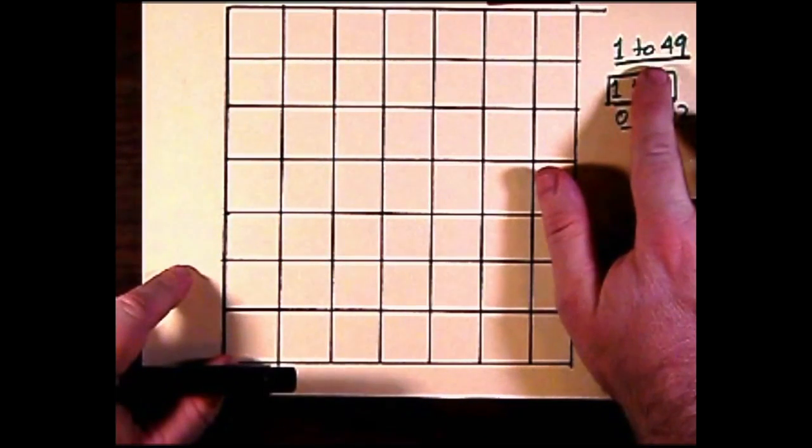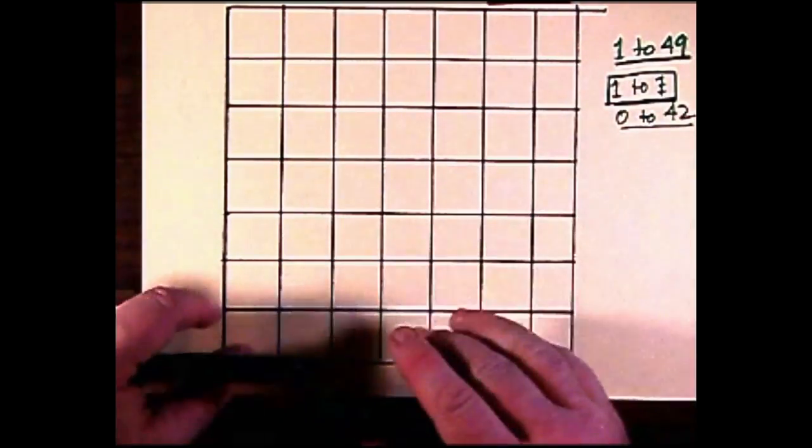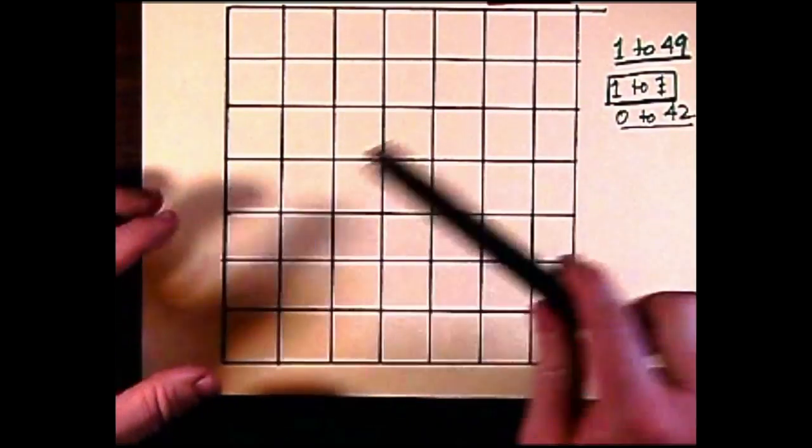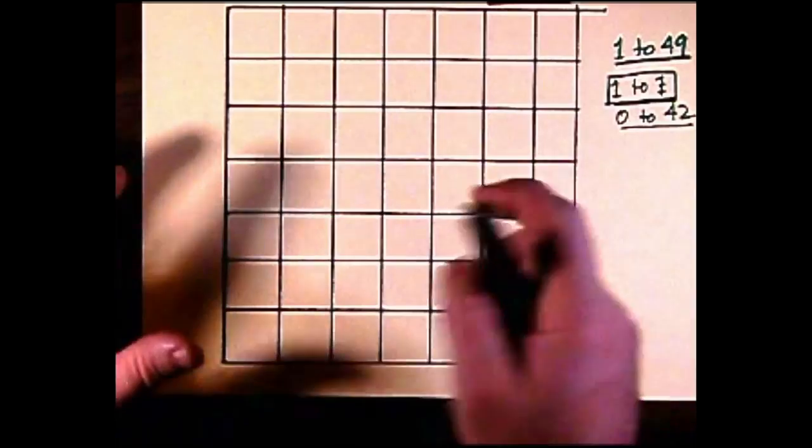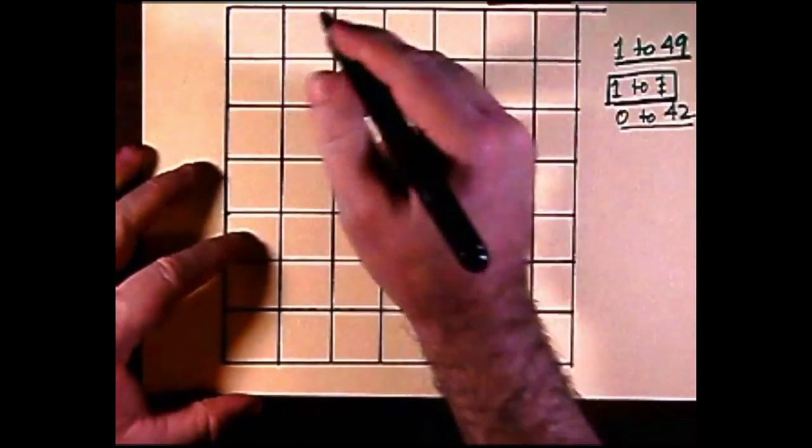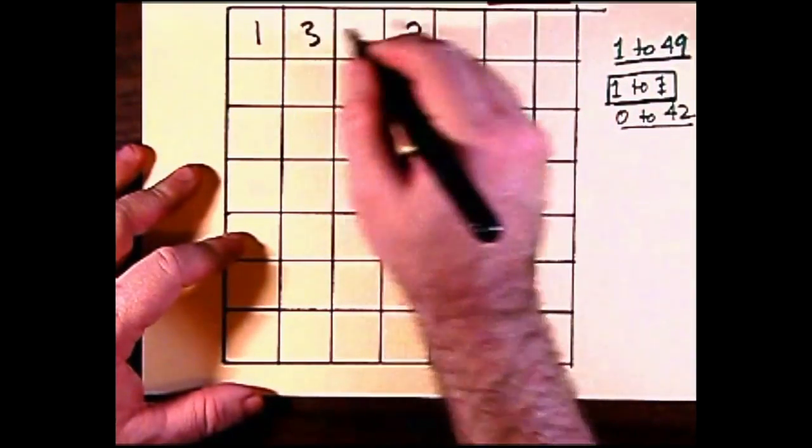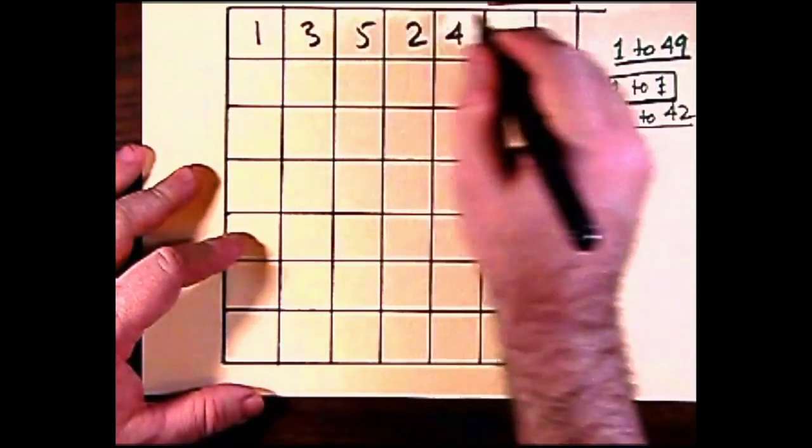We're going to do three squares: 1 to 49, 1 to 7, and 0 to 42. The first square consists of the numbers from 1 to 7. What we're going to do is arrange them randomly on the first row, just picking squares to sequentially put the numbers 1 through 7.